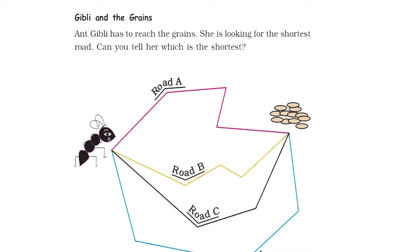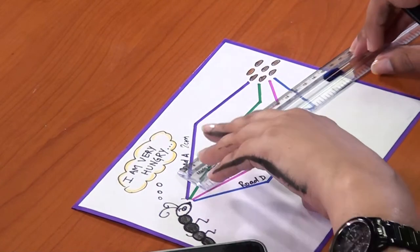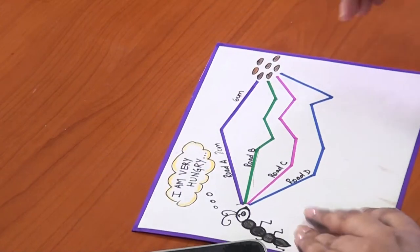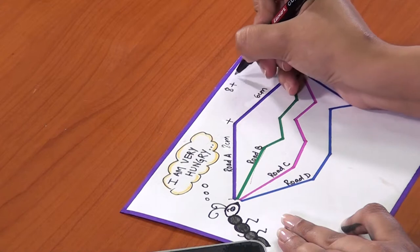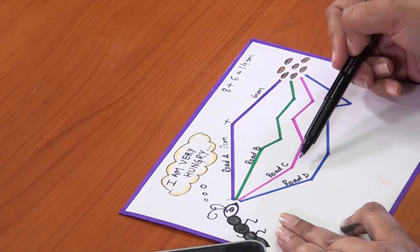Do you love solving riddles? Let's solve a short one. Ghibli has to reach the grains as she is very hungry and is looking for the shortest road. Would you like to help her? The thing required to measure length is a centimeter scale, which I hope you all have in your geometry box. We will use this scale to find the length of all the roads. Road A starts at 0 centimeters — it measures eight centimeters, then crosses and has another segment of eight centimeters plus six centimeters, totaling fourteen centimeters. We will measure roads B, C, and D similarly and compare to tell Ghibli which road she should take.